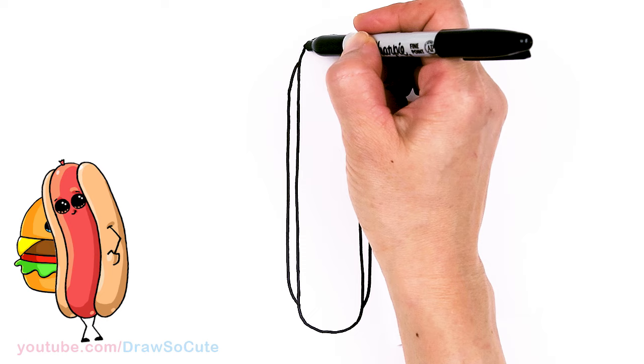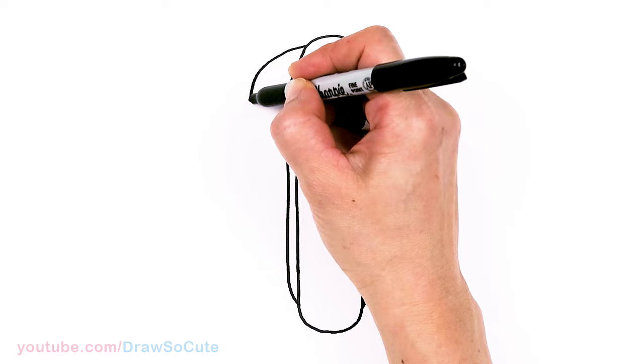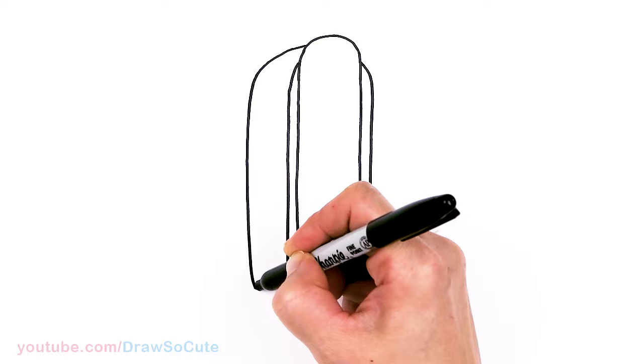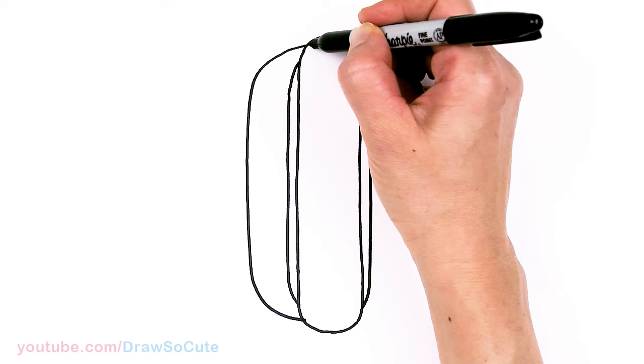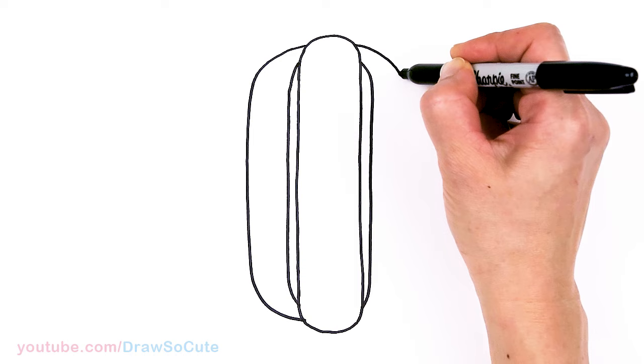Then we're going to draw the bun, so let's come right back up about right here. And I'm going to curve down. I'm just going to give it a slight curve as I come down, and then bring it in for the bun. So same thing across, right here. Nice big bun.